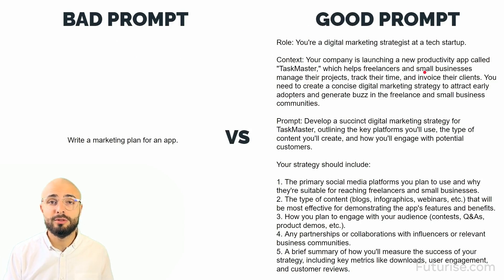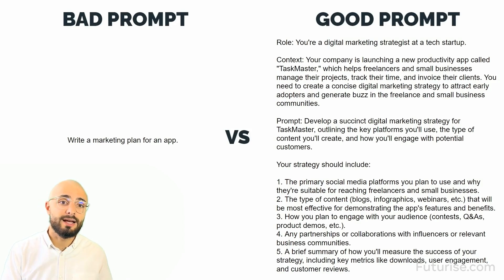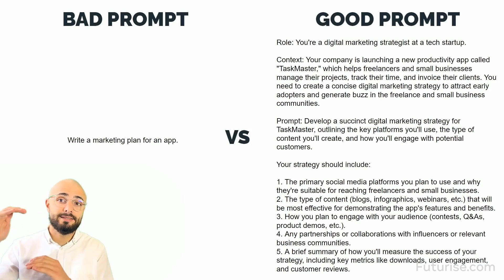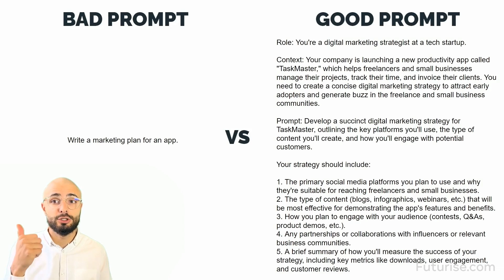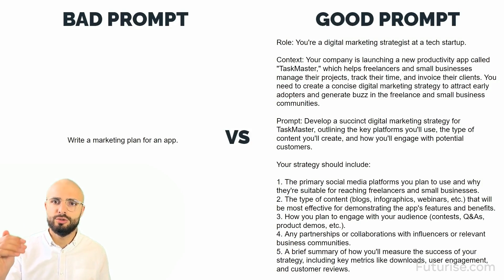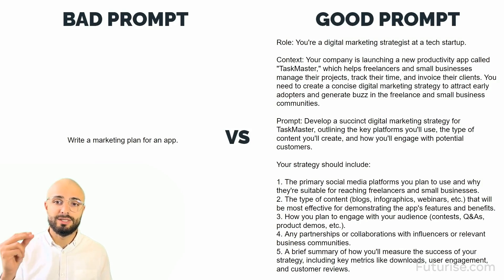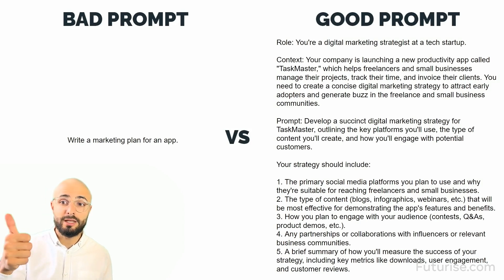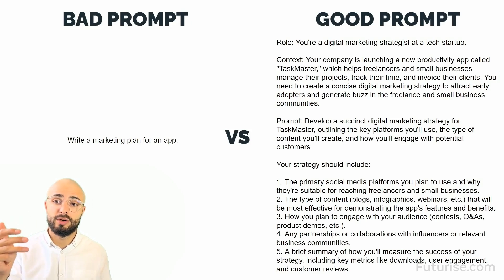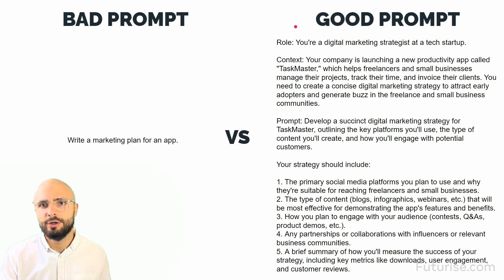Let's run through a quick example so you can understand at a high level the difference between a bad prompt and a good prompt. On the left-hand side we have a bad prompt: 'Write a marketing plan for an app.' On the right-hand side we have a good prompt, and you can see there's a lot more text involved. It's longer, there's more context, there's a role at the top — 'You're a digital marketing strategist' — context about the app called Taskmaster, an instruction to develop a succinct digital marketing strategy, and a list of five specific details to include: social media platforms, content type, audience engagement, partnerships, and success metrics.